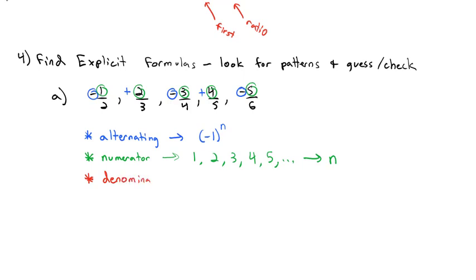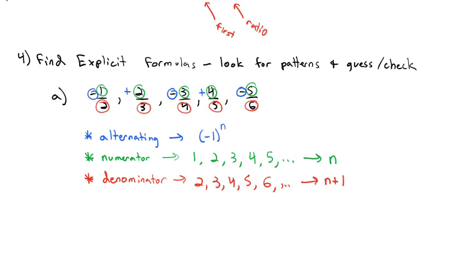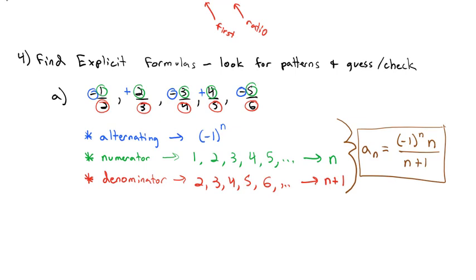Looking at the denominators: 2, 3, 4, 5, 6 — those are always 1 more than the term number, so the denominator is n plus 1. Putting it all together, the nth term is negative 1 to the n, times n over n plus 1. This is the explicit formula for the sequence.